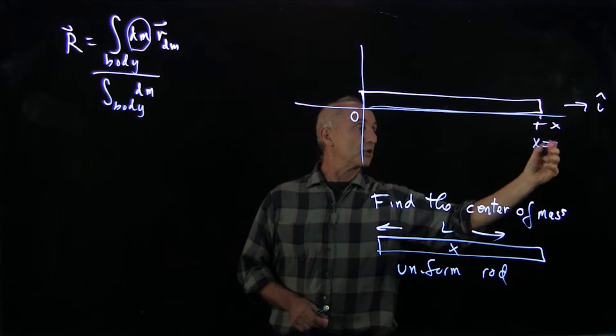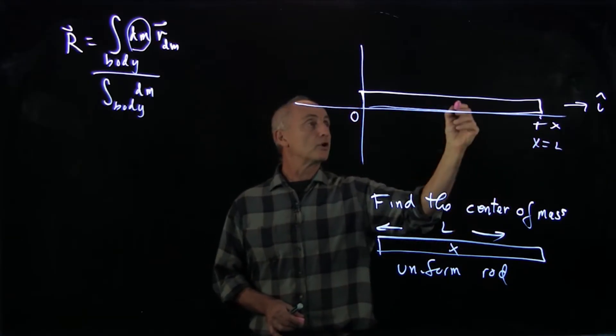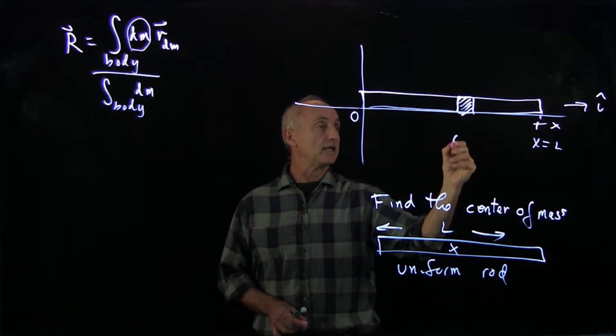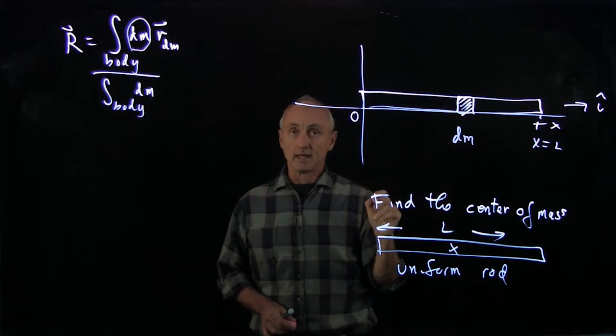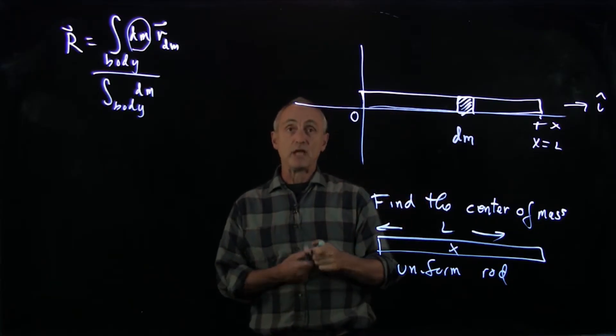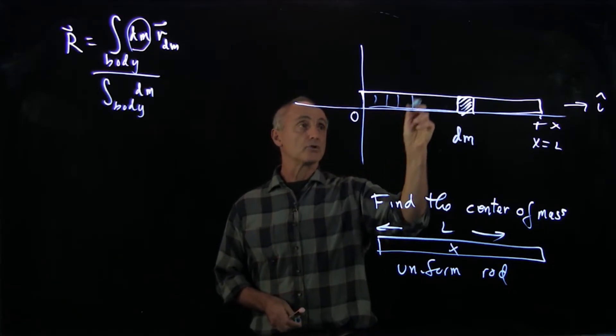Note down here, this is x equals l. So I'll arbitrarily pick an infinitesimal element. I'll shade it in dm. That represents, this is what I'm going to make my summation over when I do my integral.